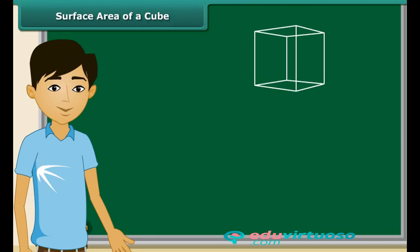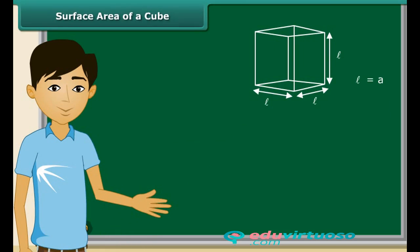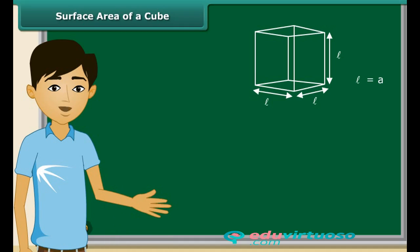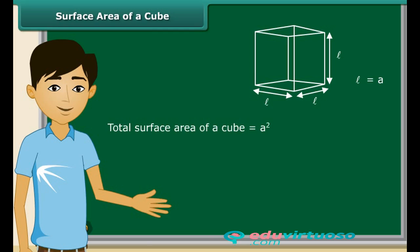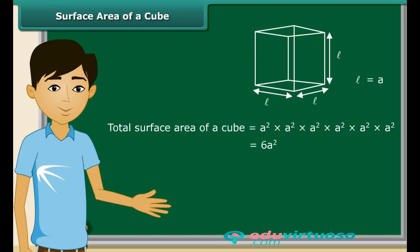Look at this cube. It is easy to see that the cube has 6 sides and each side is a square. Now to derive the formula of the surface area of a cube, let the length of one side be A. Since there are 6 sides, the total surface area is 6 times A square, which is equal to 6a².